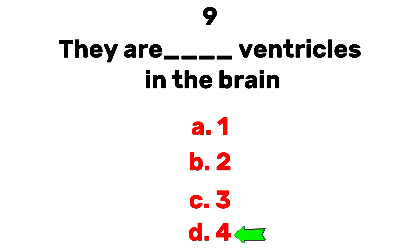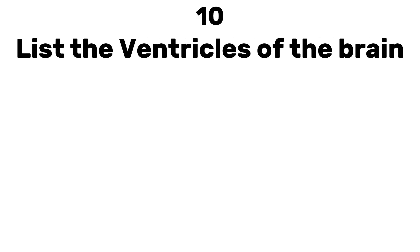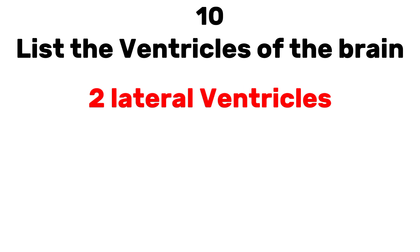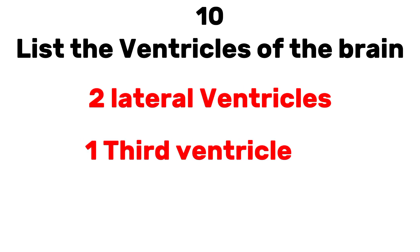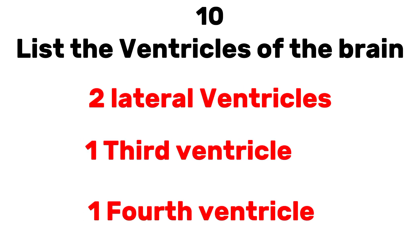Answer: D) four. Number ten: list the ventricles of the brain. There are four ventricles in the brain: two lateral ventricles, one third ventricle, and one fourth ventricle.